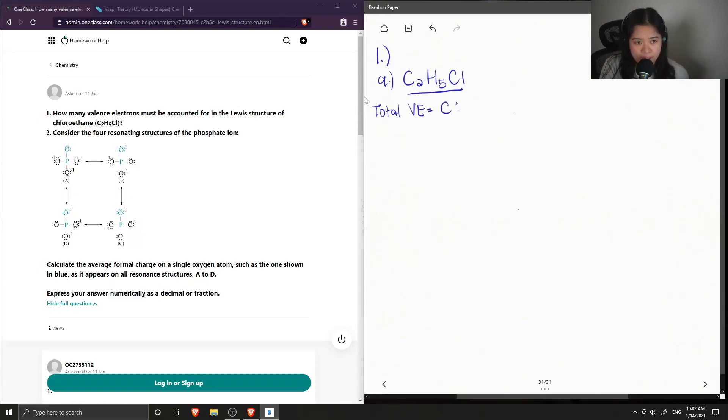Carbon has four valence electrons, and there are two carbon atoms, so we multiply this by two. Hydrogen contains one valence electron, and there are five hydrogen atoms. And then chlorine contains seven valence electrons. So if we add these all up, we get a total of 20.